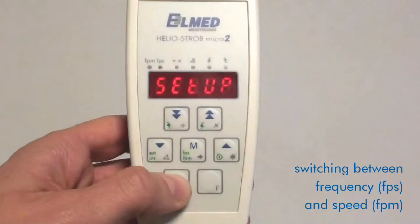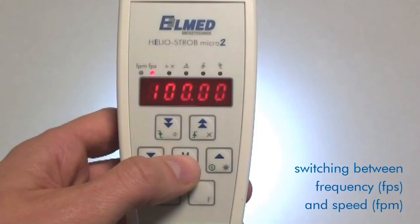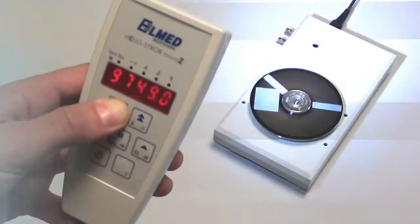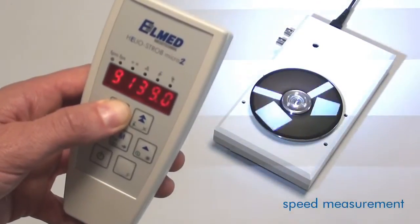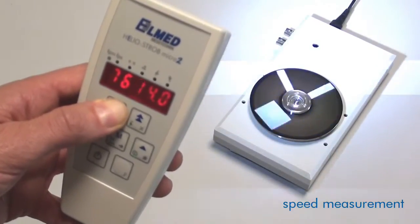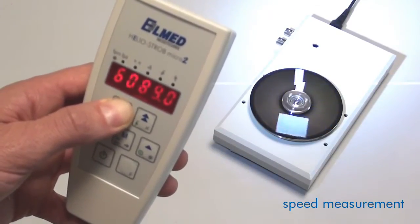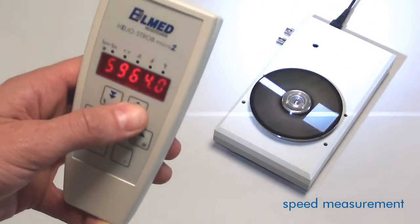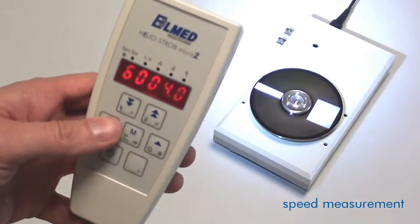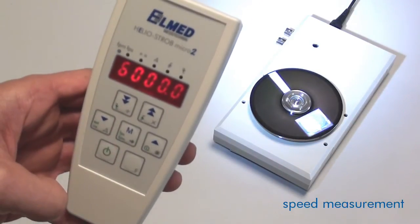For the activation of the setup mode in green symbols, please press the ON key while the device is switched on. By pressing the COMMAND key FPS and FPM, you can now change between the modes frequency and revolution speeds. The following example shows how easy it is to measure revolution speeds with the HelioStrobe Micro 2. Highlight the object with the maximum possible frequency or object speed, then continuously reduce the frequency until the object seems to come to a standstill. The measured number of revolutions is shown on the display.